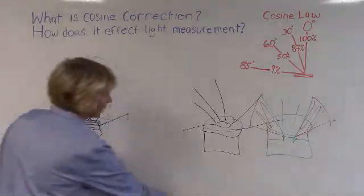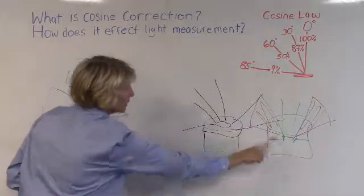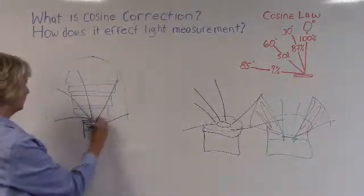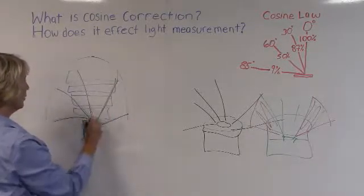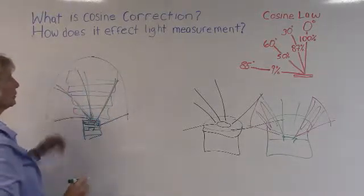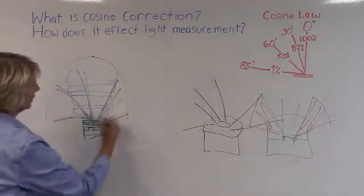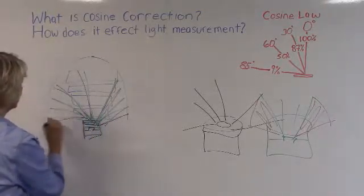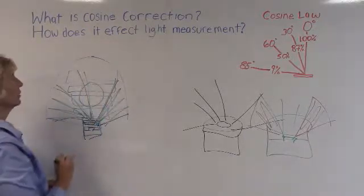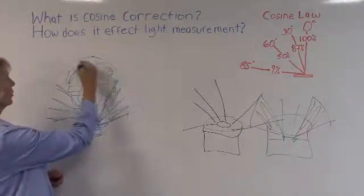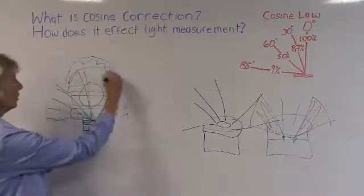However, if you were to take your detector with the recessed housing and no cosine correction, it's going to have a very limited field of view. So this means it's going to miss all of this light. Now if you picture this detector placed underneath all four of your lamps, this could mean that it's missing all of the light from your outer lamps as well as all of the light from the surrounding reflector.